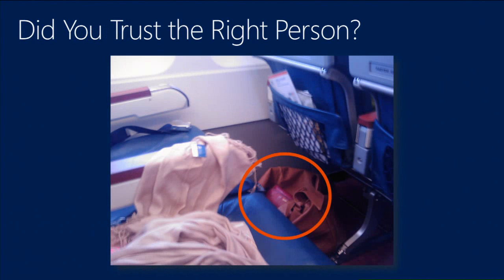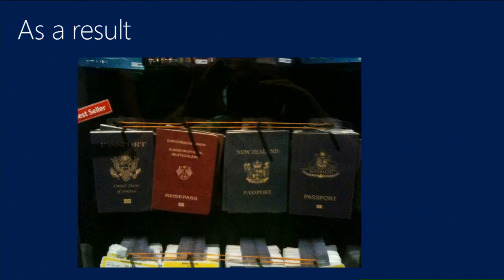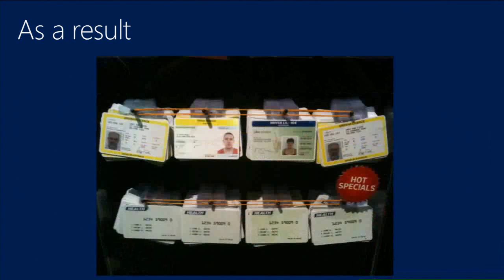On a plane, the lady next to me left her wallet there and trusted me so much. All I have to do is take a photo - I don't need the physical card, I need the numbers. As a result you'll find your identity, your credit cards being sold. There are still best sellers: passports from the United States, Germany, New Zealand, Australia, and driver's licenses.